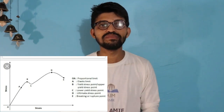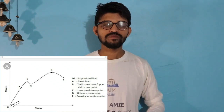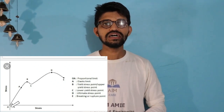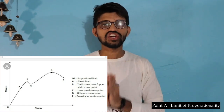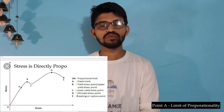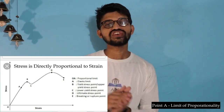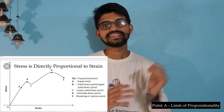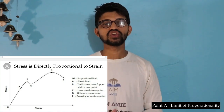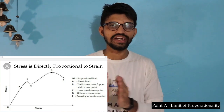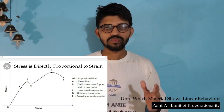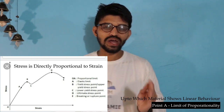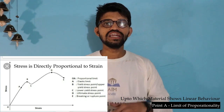Here is the stress-strain curve for the ductile material. Point O is the origin, and point A is the limit of proportionality. The straight line from O to A represents that stress is directly proportional to strain — as stress increases, strain also increases. This straight line represents the linear behavior of the material up to point A, which is why it is known as the limit of proportionality.